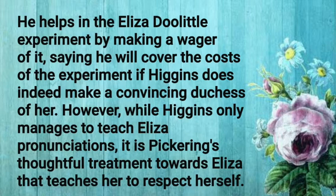Pickering is the author of the book 'Spoken Sanskrit' and is a British teacher. He is very knowledgeable about Indian dialects. He treats Eliza — who starts as a flower-selling girl — as a lady of society, and his respectful mindset and behavior contribute significantly to her transformation.